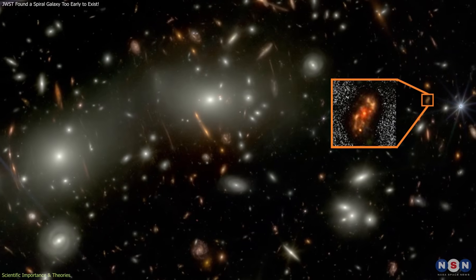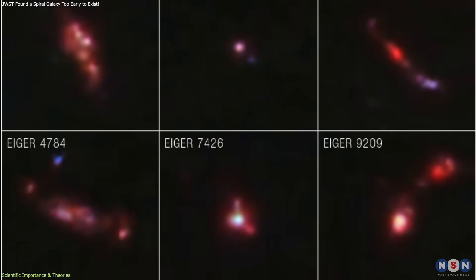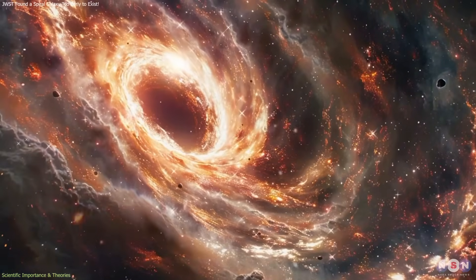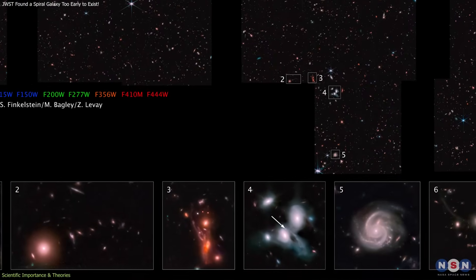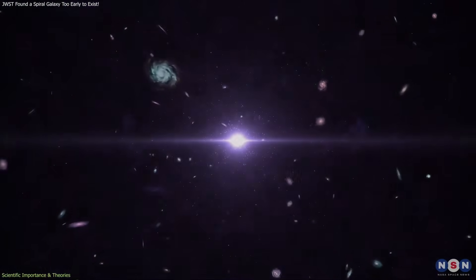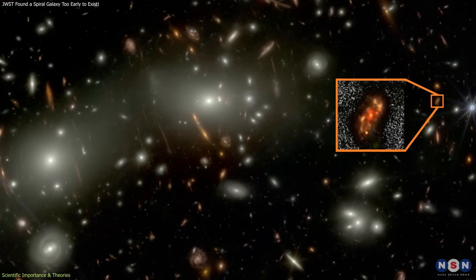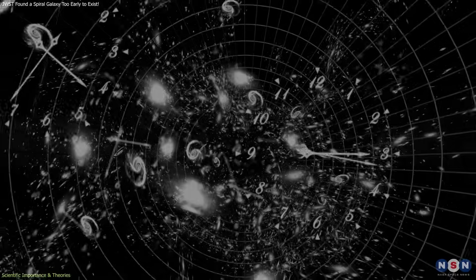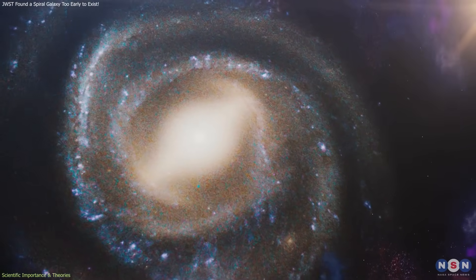Another important factor is that Alec Nanda fits into a broader trend revealed by JWST. Several early galaxies have been found to be more massive, more luminous, or more organized than expected. Some contain large black holes earlier than predicted. Others show extended disks or mature stellar populations. Individually, each discovery can be explained with some adjustments. But collectively, they indicate that the early universe may have been more conducive to rapid structure formation than previously believed. Alec Nanda strengthens this pattern because it presents a mature form, spiral structure, that is particularly sensitive to disk stability.